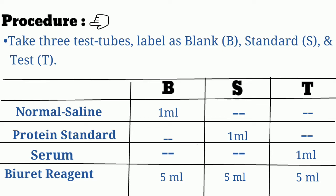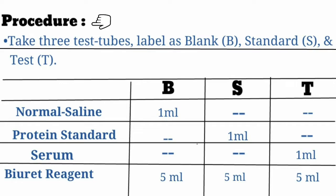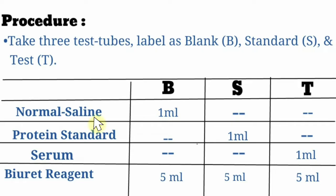Procedure for the test: take 3 test tubes and label them as blank, standard, and test. In the blank test tube add 1 ml normal saline; in the standard test tube add 1 ml protein standard solution; in the test test tube add 1 ml serum. Then add 5 ml Biuret reagent to all three test tubes. Mix the solution and read the intensity in the colorimeter at 540 nanometers.